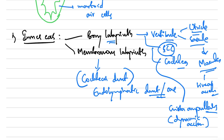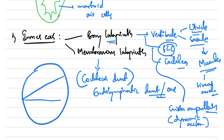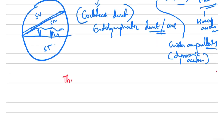In the cochlea, a cross-section shows the scala vestibuli, scala media, and scala tympani. These are divided by the Reissner's membrane and the tectorial membrane, with inner hair cells and outer hair cells for sound conduction. That covers the anatomy of the inner ear. Thank you so much for watching the video till the end — I'll come up with more videos like this.